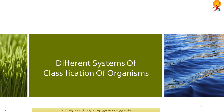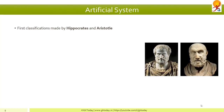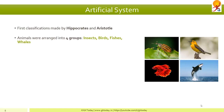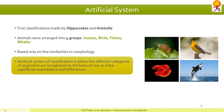There are different systems of classification of organisms. The first one is the artificial system. The first effort to classify organisms was done by Hippocrates and Aristotle, who arranged animals into four groups: insects, birds, fishes, and wades. The classification was based only on a few similarities in morphology and was called artificial classification. Under the artificial system, different categories of organisms are recognized on the basis of one or a few superficial resemblances and differences.